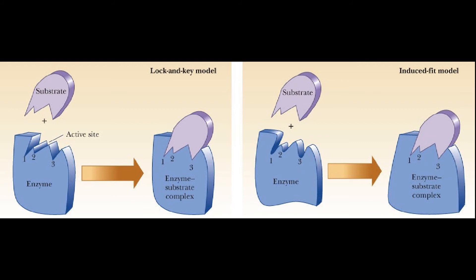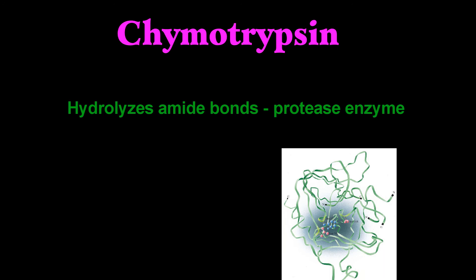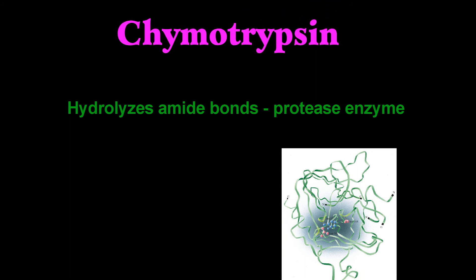Let's go over an example — I'm going to select chymotrypsin. Chymotrypsin is a digestive enzyme; it is a component of pancreatic juice and acts in the duodenum. It's a protease enzyme performing proteolysis, which is the breakdown of a protein or polypeptide. It's going to be acting upon peptide bonds, preferring to cleave the amide bonds where the carboxyl side of the amide bond is a large hydrophobic amino acid, such as tyrosine, tryptophan, and phenylalanine. These amino acids contain an aromatic ring in their side chain that fits into the hydrophobic pocket of chymotrypsin.